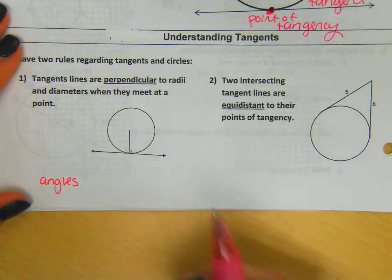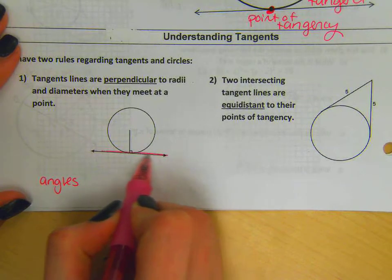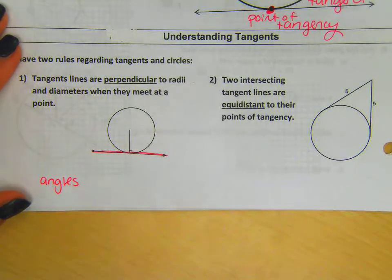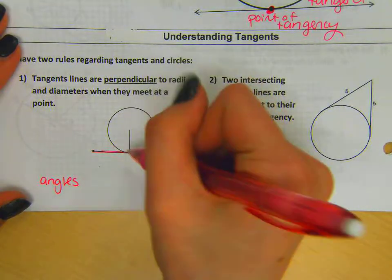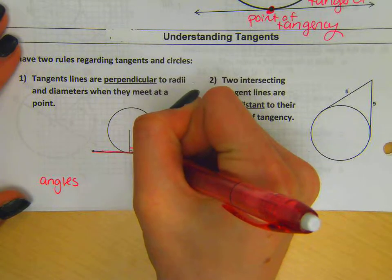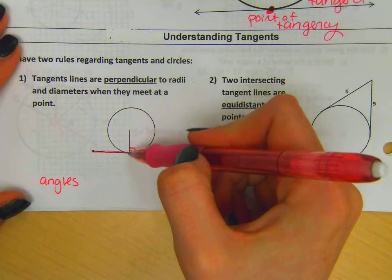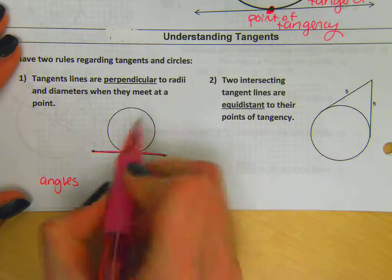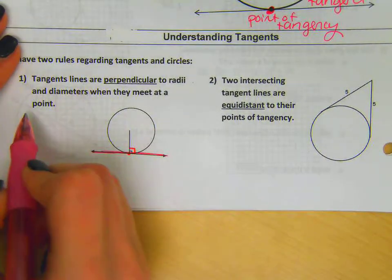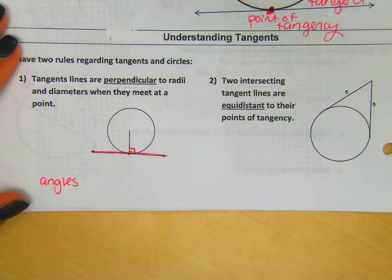Rule number one says that tangent lines, and so again this line down here as we discussed, is called the tangent line. It is perpendicular, means it intersects at 90 degrees to a radius or a diameter when they meet at a certain point, and that point specifically is the point of tangency.